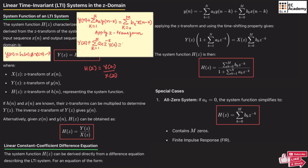The right-hand side becomes summation from k=0 to M of b_k·z^(−k)·X(z), by applying the time shift property. On the left-hand side, taking Y(z) as common, we get Y(z) · [1 + summation from k=1 to N of a_k·z^(−k)]. Rearranging the right-hand side, we get X(z) · summation from k=0 to M of b_k·z^(−k).